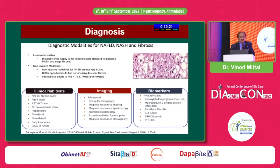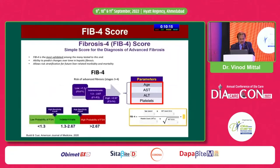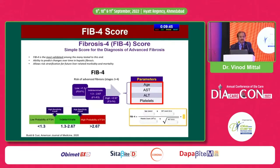Diagnosis is based on clinical parameters, imaging, and biomarkers. The FIB-4 score is the most important. A score less than 1.3 indicates low probability; 1.3 to 2.67 is intermediate; and more than 2.67 is severe. It depends on four parameters: age, AST, ALT (SGPT), and platelet count. Using the formula, you can calculate risk, assess prognosis, and treat accordingly.